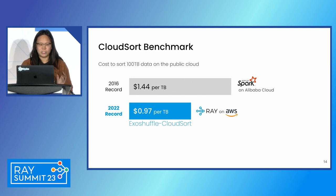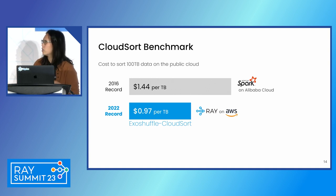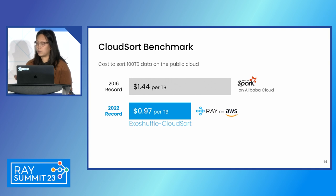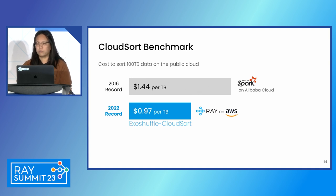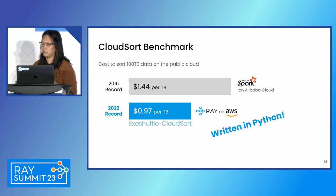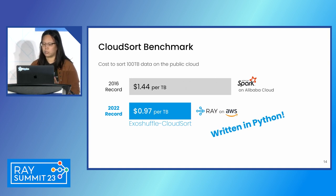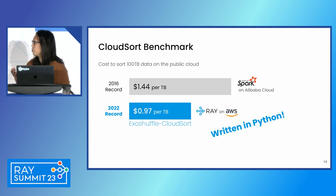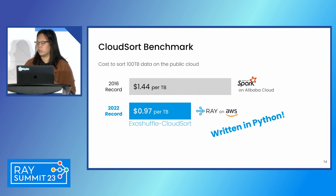I wanted to go a bit more into this CloudSort benchmark and why we think this is such a big deal. The previous record was set in 2016 by Spark, but it wasn't the open source version — it was a specialized fork built specifically for this benchmark. In contrast, we broke this record recently using an official release of Ray. The main distributed sorting logic was all implemented at the Python level as part of the ExoShuffle project. This shows that even though Python is traditionally considered a slow language, when you combine it with the Ray data plane, you can get pretty amazing results.